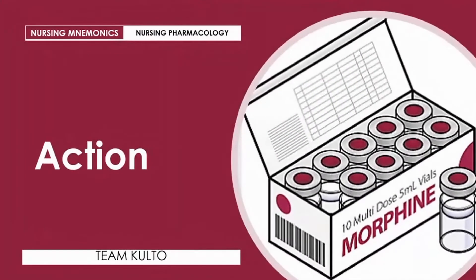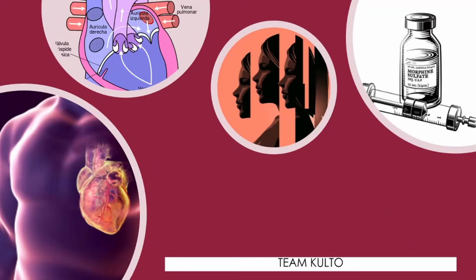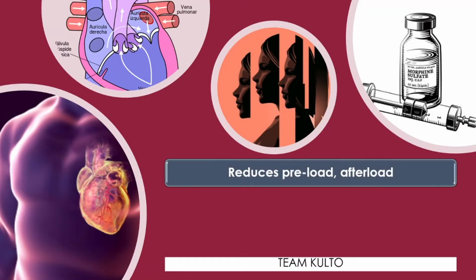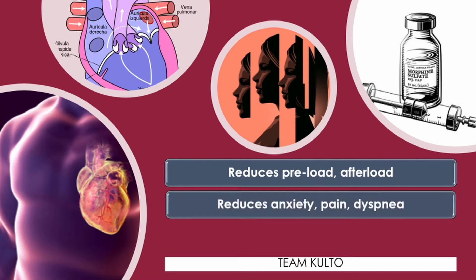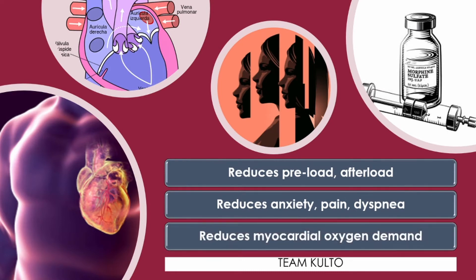In terms of action, ano nga ba ang action ng ating morphine? Una, it reduces preload and afterload of the heart. It also reduces anxiety, pain, and dyspnea — remember, ang morphine natin is binibigay for patients suffering from severe pain, and sometimes for patients having dyspnea and anxiety. And lastly, it reduces myocardial oxygen demand. These are the actions of your morphine sulfate.